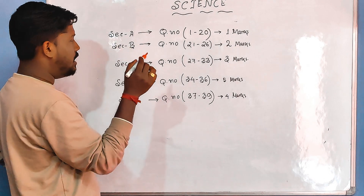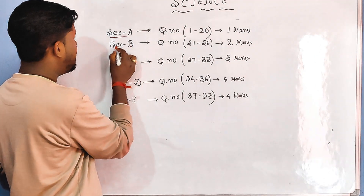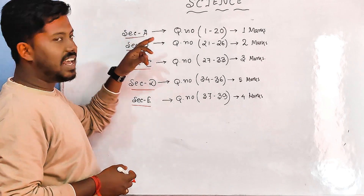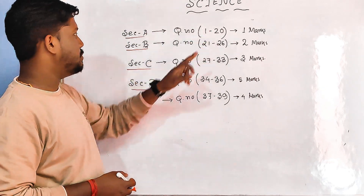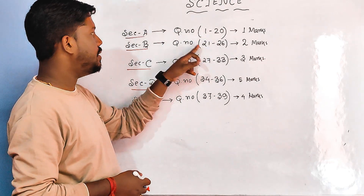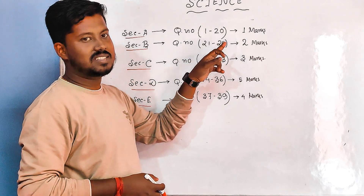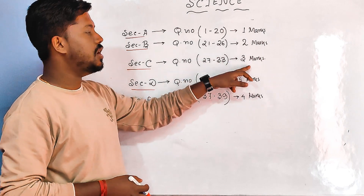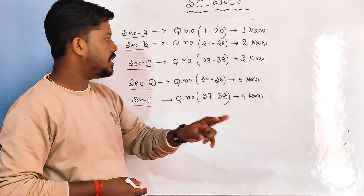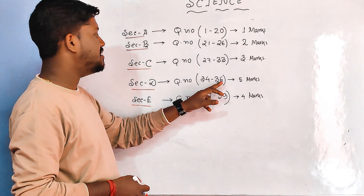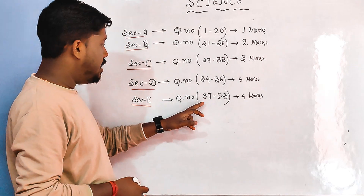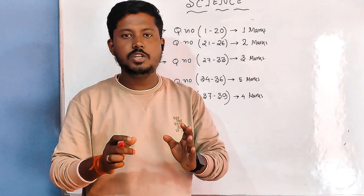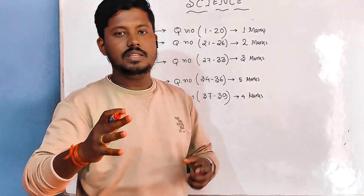First, you will get Section A, Section B, C, D, and E. In Section A you will get 20 MCQs. In Section B, question numbers 21 to 26, there will be two-mark questions. From question number 27 to 33 there will be three-mark questions. From question number 34 to 36 there will be five-mark questions. And there will be four-mark questions as well.